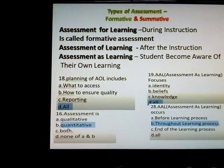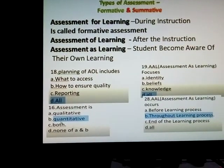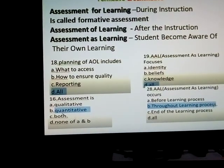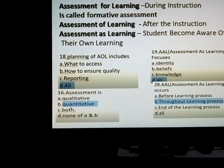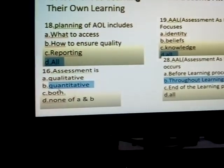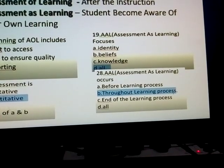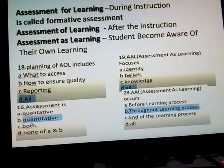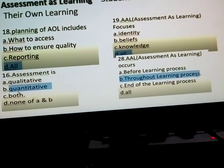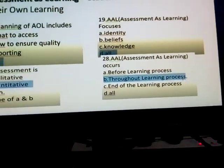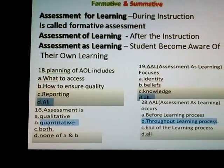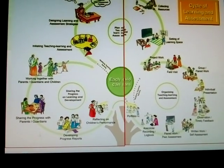Questions: Planning of assessment of learning includes — what to assess, how to ensure quality, and reporting. These are important for assessment of learning. Assessment is always quantitative. Assessment as learning means identifying beliefs and knowledge — these three are essential to assessment as learning. Assessment as learning occurs throughout the learning process.